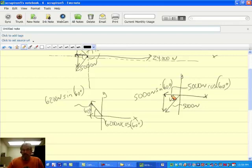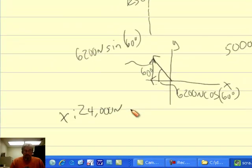So now, if I kind of set this up with x, the pickup direction being positive, on x-axis, here's what I get. On the x-axis, I've got the 24,000 newtons minus, because it's going the other way, 6,200 newtons times the cosine of 60 degrees.